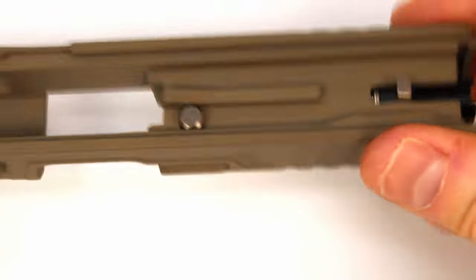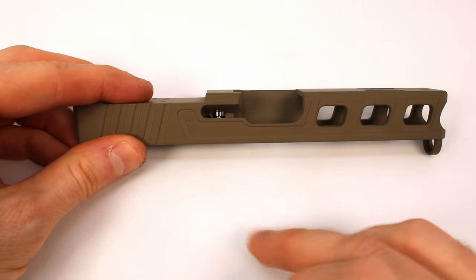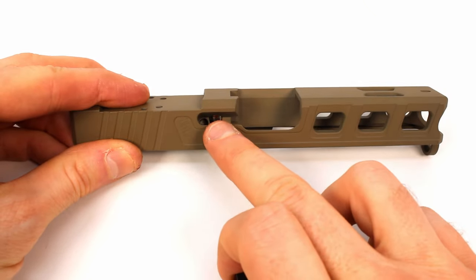So go ahead and grab the extractor here. You can see we got this little round end on the extractor, and that's going to line up with this little hole in the slide here, just behind the firing pin safety. With the extractor on there, just keep pressure on it with your finger.